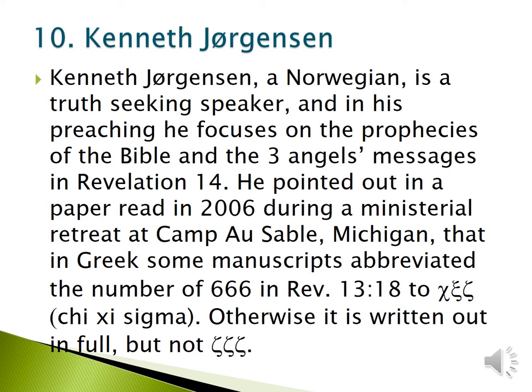Kenneth Jergensen, a Norwegian, is a truth-seeking preacher who focuses on the prophecies of the Bible and the three angels' messages in Revelation 14. He pointed out in a paper read in 2006 during a ministerial retreat at the campus of Michigan that in Greek, some manuscripts abbreviated the number of 666 in Revelation 13:18 to Chi, Xi, Sigma.